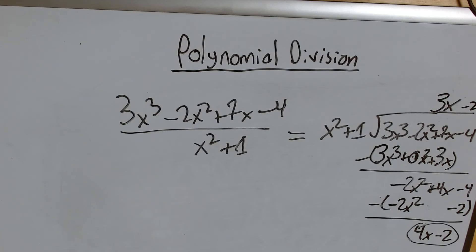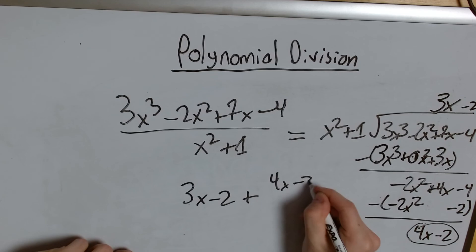So putting it all together what does it look like? What is my answer? Well it's 3x minus 2 plus 4x minus 2 over x squared plus 1.